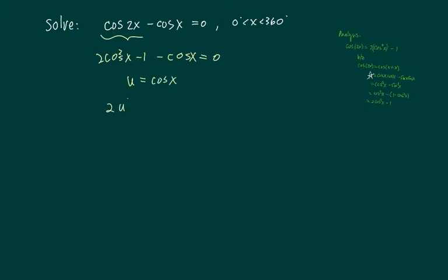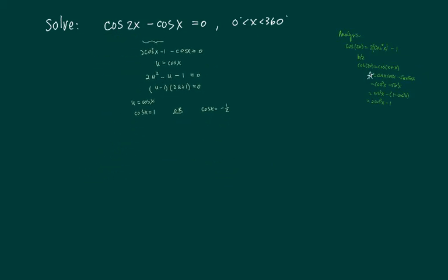So I have 2u squared minus u minus 1 equal to 0. Factor this one, you have u minus 1 and 2u plus 1 equal to 0. So substituting each one, you'll see that u is equal to cosine x. So we have cosine x equal to 1, or we're going to solve cosine of x equal to minus a half.